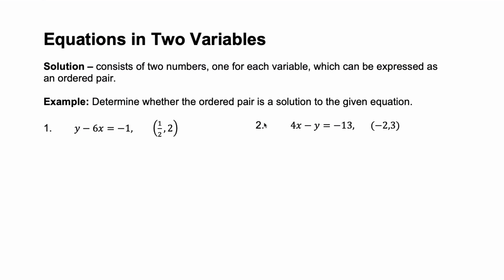An equation in two variables usually uses the variables x and y. A solution consists of two numbers, one for each variable, which can be expressed as an ordered pair — usually written as the ordered pair (x, y).